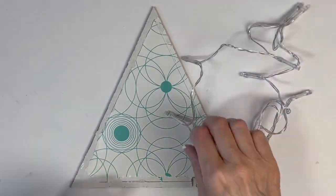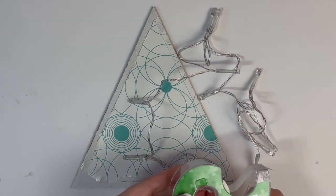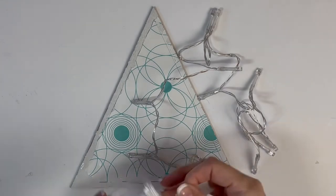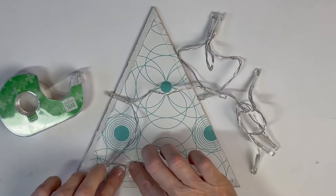We'll be attaching the fairy lights one at a time with ordinary clear tape. Be sure you attach the tape to the cords only, not to the bulbs. Be sure each bulb is inside that line that you drew earlier.